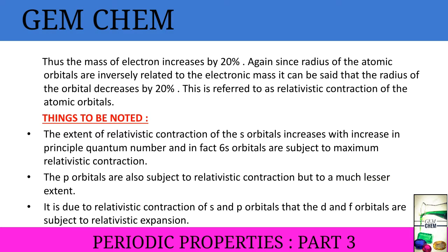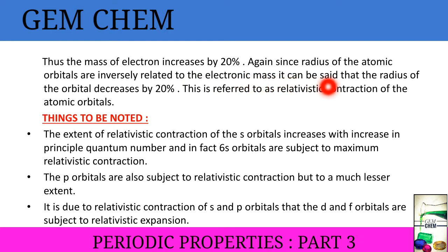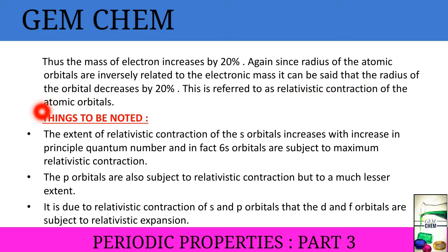Thus we can conclude that the mass of the electron increases by 20%. Since the radius of atomic orbitals is inversely related to electronic mass, the radius of the orbital decreases by 20%. This decrease in orbital radius is known as relativistic contraction of atomic orbitals, and it generally takes place for s and p orbitals.